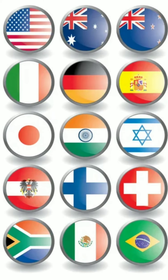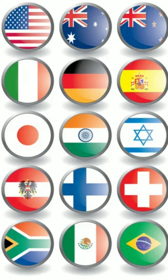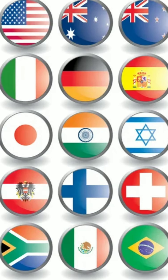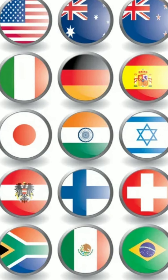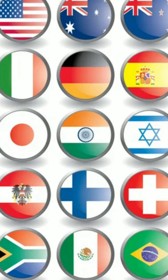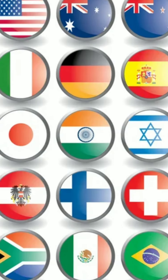Sari country ke paas apna alag flag kiyo hota hai? Because every individual flag symbolizes a free and a republic country.